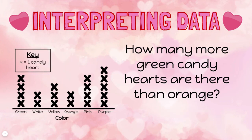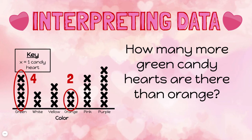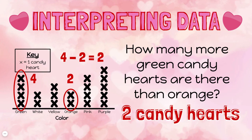Now let's answer a question using a line plot: how many more green candy hearts are there than orange? 'How many more' usually suggests that I need to subtract. I can see that I have more green candy hearts — four green candy hearts, in fact — and fewer orange candy hearts; I only have two orange. So to figure out how many more green, I can set up a subtraction problem: four minus two equals two. I have two more green candy hearts than I do orange.